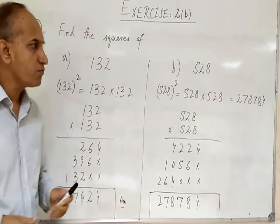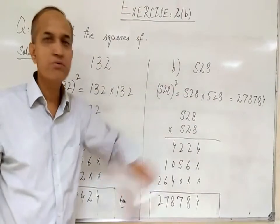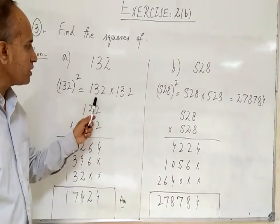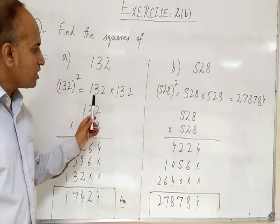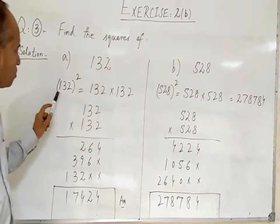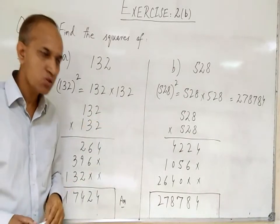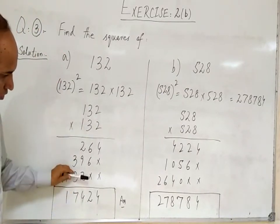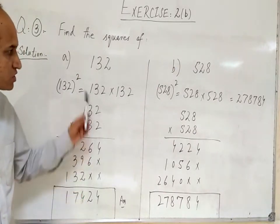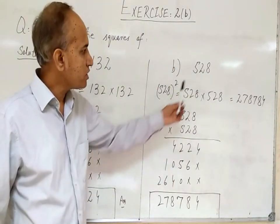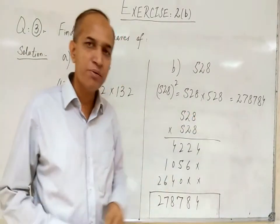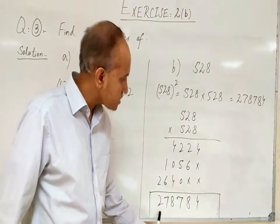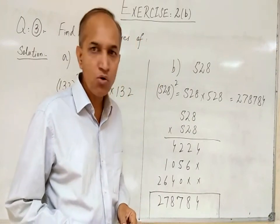In question number 3, we have to find the squares of 132 and 528. The square of 132 is 132 × 132 = 17424. Similarly, the square of 528 is 528 × 528 = 278784. Thank you.